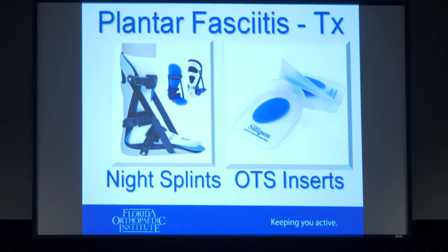On the left is a picture of a night splint — there are many versions, including one called a Strassburg sock, which is like a big tube sock that wraps around your leg. The basic goal is just to keep your ankle from pointing your toes down overnight. On the right is a heel cushion insert you can get for your shoes.